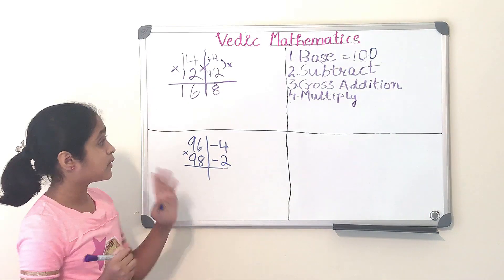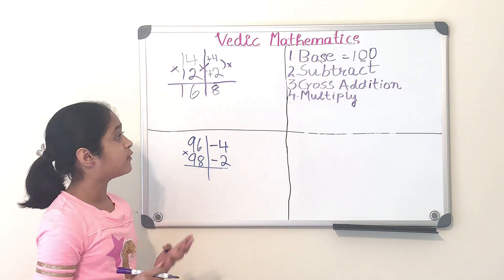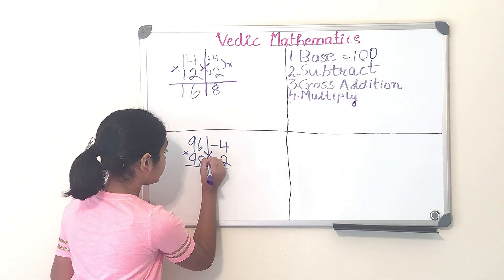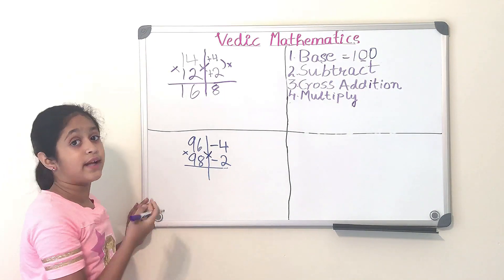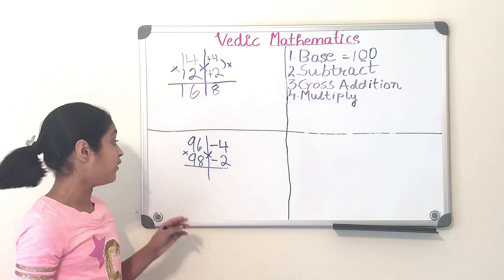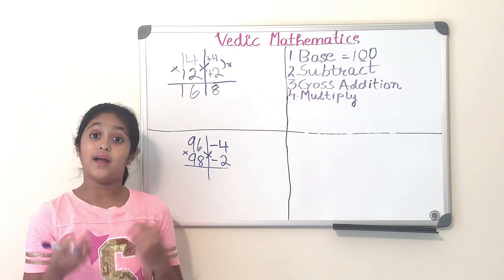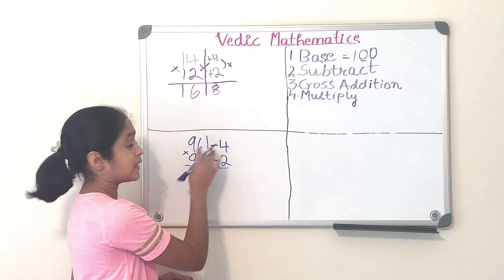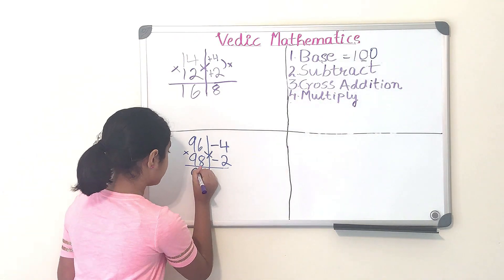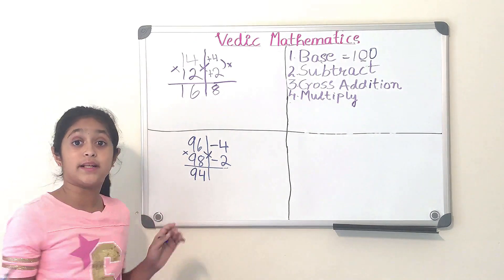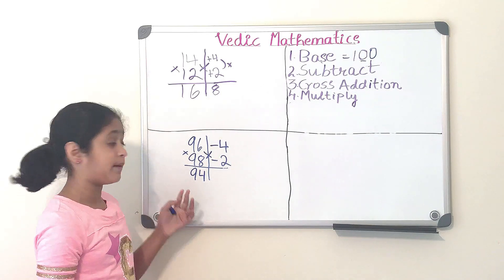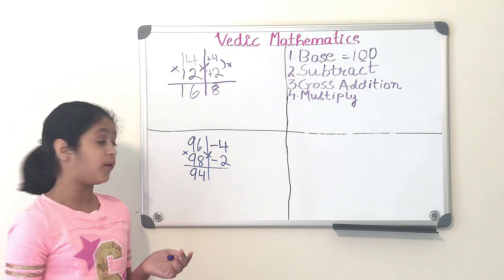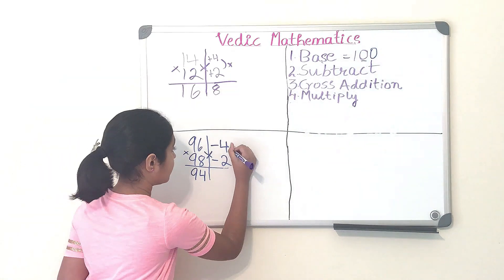We also do 98 minus 100, which equals minus 2. Step three is cross addition. We can do 96 plus minus 2, or 98 plus minus 4 — they both equal the same thing. So 98 plus minus 4 equals 94, and 96 plus minus 2 also equals 94.